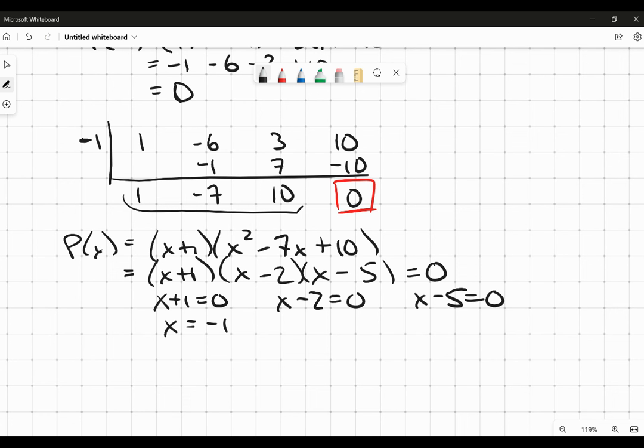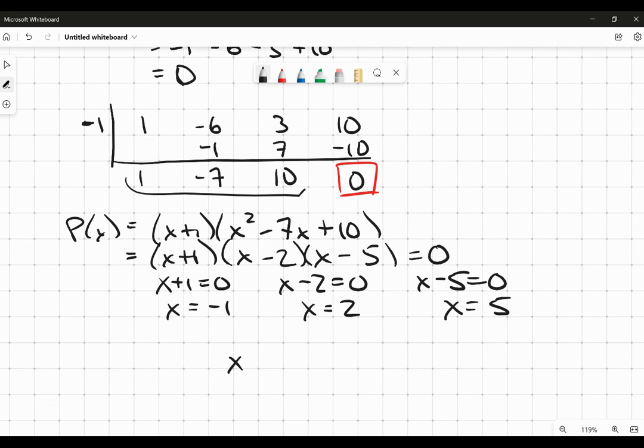which means if x is negative 1, I know that the whole thing will go to 0. If x is positive 2, it'll go to 0. Or if x is positive 5. And so those are my solutions. And I might write it out like this,